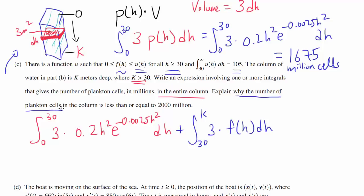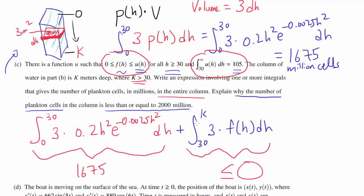Explain why the number of plankton cells in the column is less than or equal to 2000 million. They want us to show that this summation of these two integrals is less than or equal to 2000. How can we do that? Obviously, we gotta use this information somehow, this inequality. We know this fact about U(H). We know the value of this is 1675. So we want to make sure that this thing is not going to be too large. If this thing was like 2000, obviously we're going to have something more than 2000 when you add them up. So we want to bound the second integral.